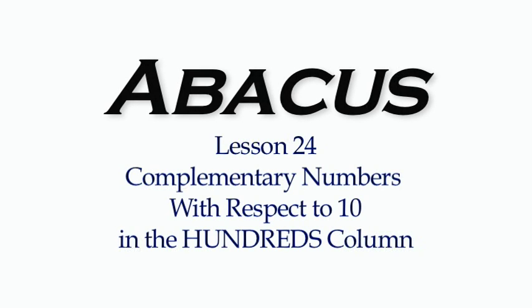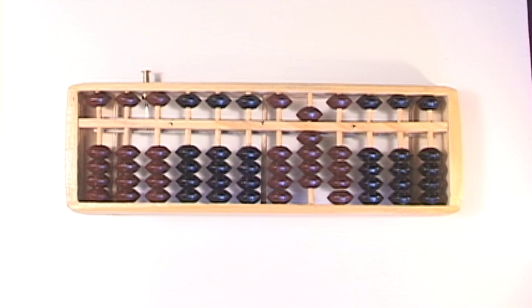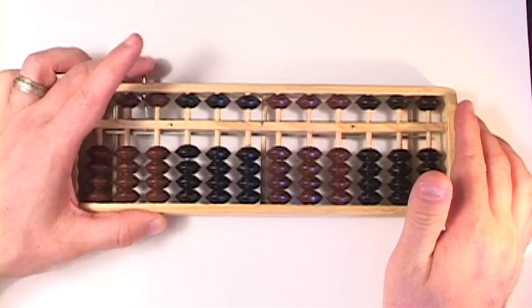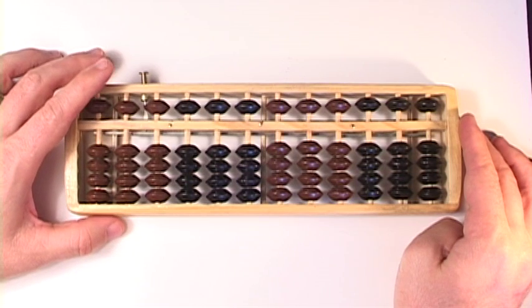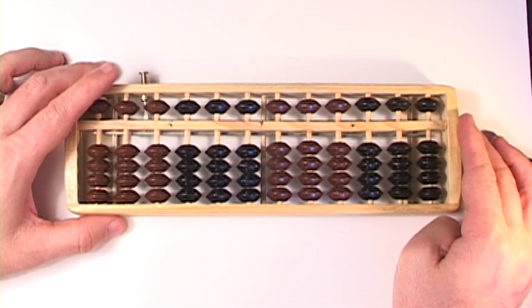Lesson 24 of Learning the Abacus. Complementary numbers with respect to the number 10 in the hundreds column. Now this isn't going to be a bit harder than the last lesson. We're just adding another column of numbers. You're used to this by now. Clear your Abacus and let's get going on this because this is the fun stuff.